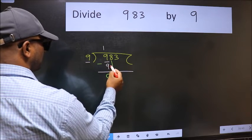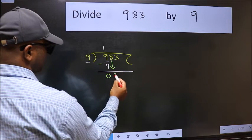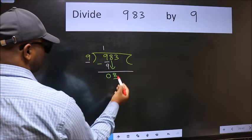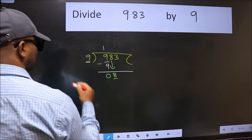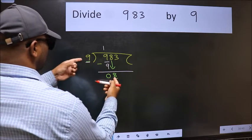After this, bring down the beside number. So 8 down. Now here we have 8 and here 9. 8 is smaller than 9.